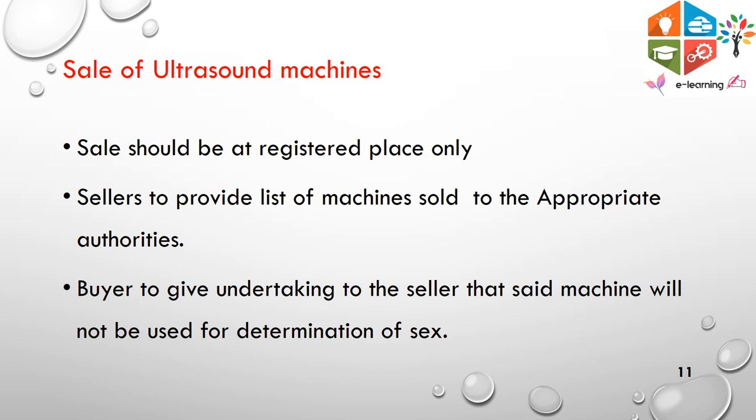Regarding regulations related to ultrasound machines, the sale of ultrasound machines should be only at a registered place. The seller should provide a list of machines sold to these centers, maintain a record, and make those records readily available to the appropriate authorities on demand. The buyer must give an undertaking in the form of a declaration to the seller that the machine will not be used for any unlawful activity like determination of sex.